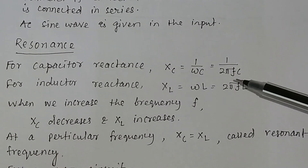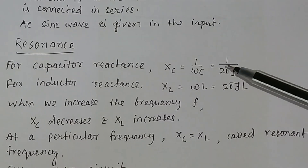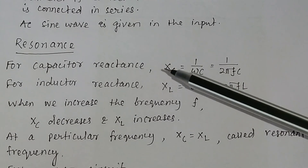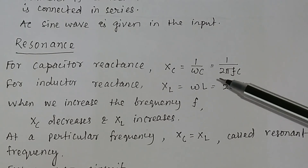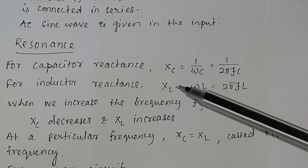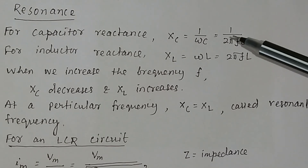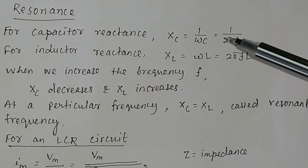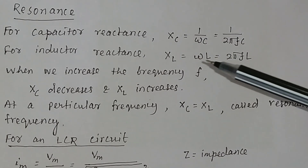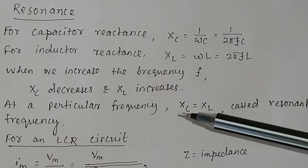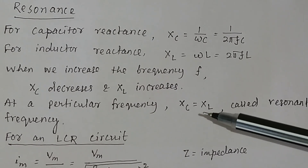So, if you increase the frequency F, then Xc, the capacitor reactance, decreases. If you decrease the value of F, the reactance of the capacitor will increase. But if you decrease the value of F, the inductor reactance will also decrease. That means if the frequency of the input sine wave increases, the capacitor reactance decreases and inductor reactance increases. So at a particular frequency, Xc becomes equal to XL, and this is called the resonant frequency.